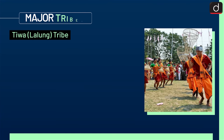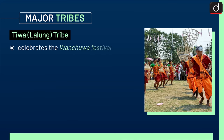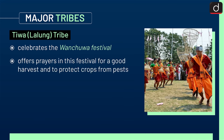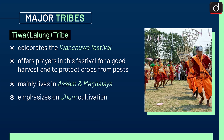First is the Teewa or Lalung tribe. This tribe celebrates the Vanchuwa festival. It offers prayers in this festival for a good harvest and to protect crops from pests. This tribe mainly lives in Assam and Meghalaya, and it emphasizes Jhoom cultivation.